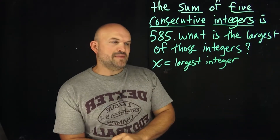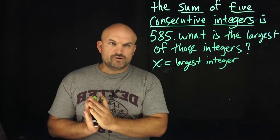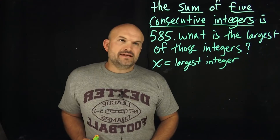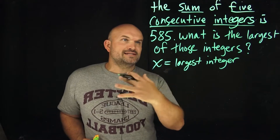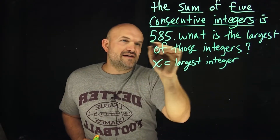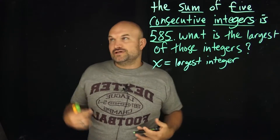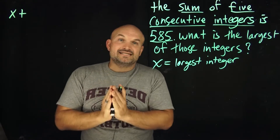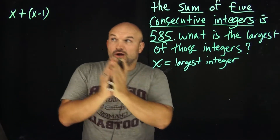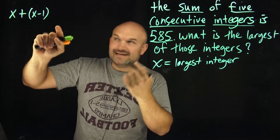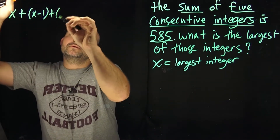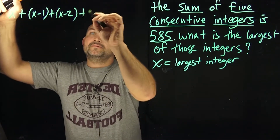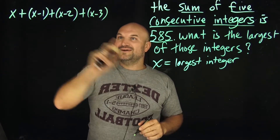So if x is going to be the largest integer, the next one — the integer right below it — would be x minus one. How many of these integers do we have? We're supposed to have five. And the sum of five consecutive integers is 585. So I need to create an equation. The next smallest would be x minus one, then x minus two, then x minus three, and one more: x minus four.